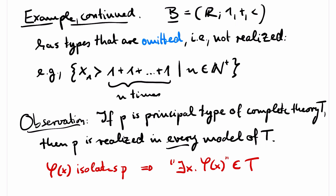The omitting types theorem can be viewed as a converse of this observation. If a type P is not principal, that is, if it is not isolated by a formula, then it can be omitted. That is, there exists a model of T that omits P.